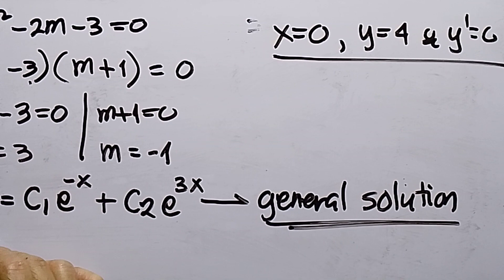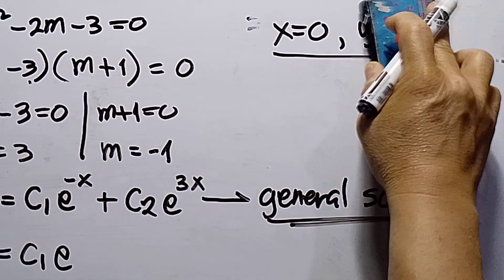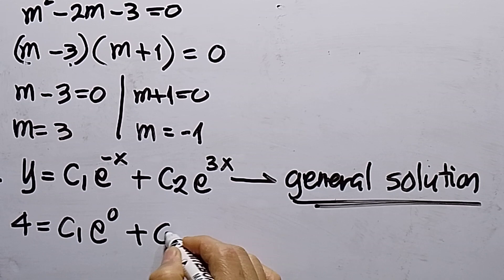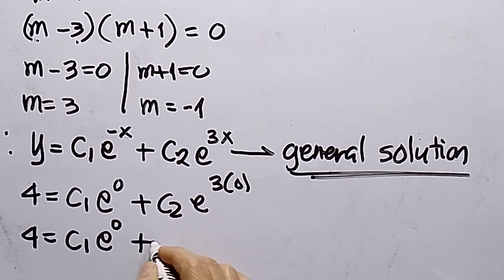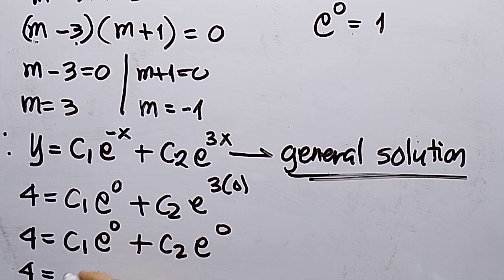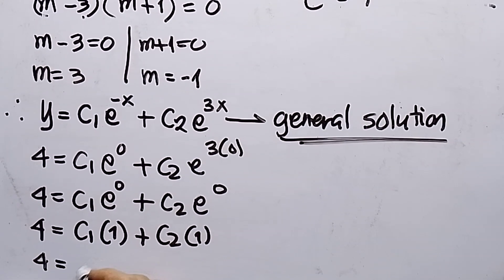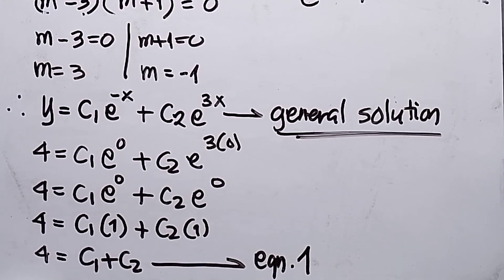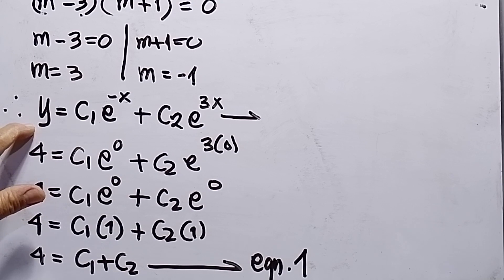Applying the condition y equals 4 when x equals 0: substituting gives 4 equals c1·e^0 plus c2·e^0. Since e^0 equals 1, this simplifies to 4 equals c1 plus c2. This is Equation 1.